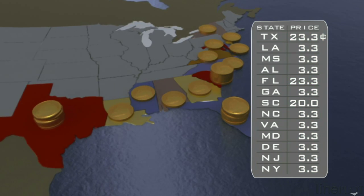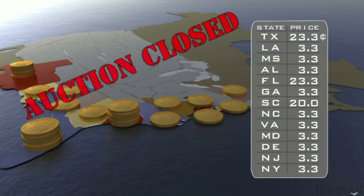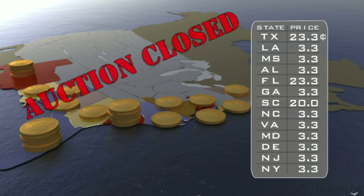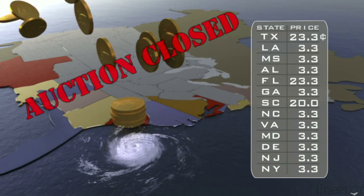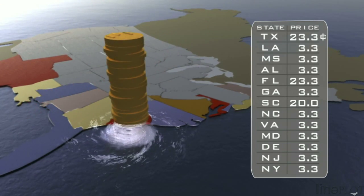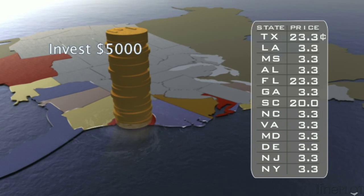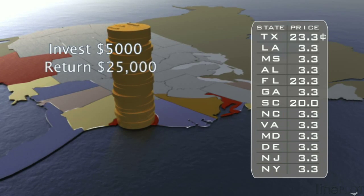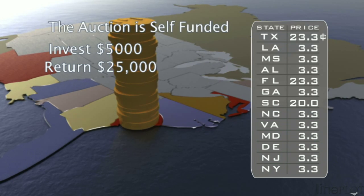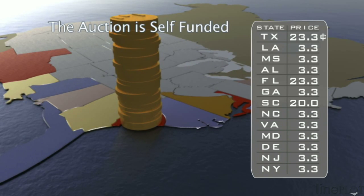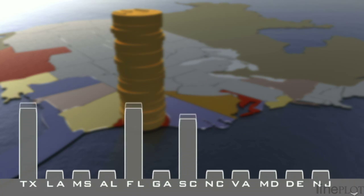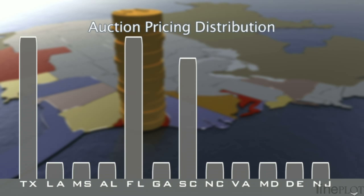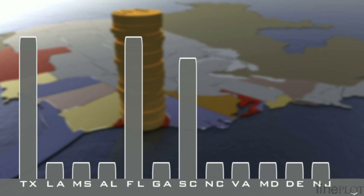When the auction closes, no more orders are accepted and prices are fixed. The final price for South Carolina is $0.20. In this example, the hurricane makes landfall in South Carolina. For every $0.20 the insurance company invested in South Carolina, they receive $1 in payout. The auction is self-funded — the losing contracts completely fund the winning contracts. The relative premium in each state is shown in this bar graph, which is the auction pricing distribution, providing a clear and direct view of the market's expectation of each outcome.